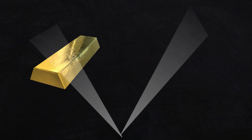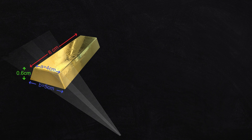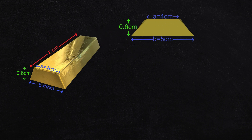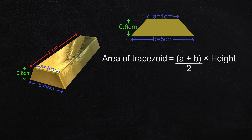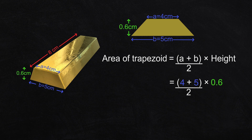For the last example, we'll calculate the volume of this gold bar in the shape of a trapezoidal prism. The ends are trapezoids of the same size. The area of the trapezoid is the average of the two parallel sides called a and b, multiplied by the height of the trapezoid. So we add 4 plus 5 and average these lengths by dividing by 2, then multiply by the height of the trapezoid, which is 0.6 centimeters. The area of the trapezoid at the end is 2.7 square centimeters.